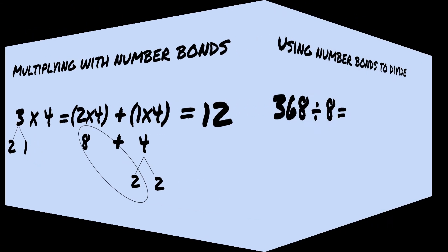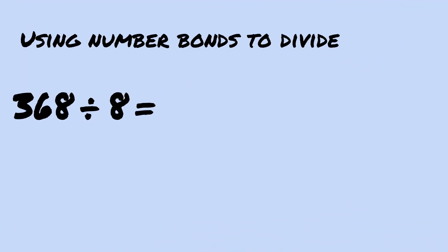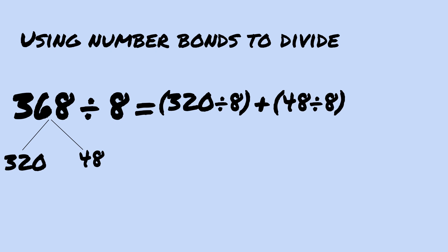We can also use number bonds to solve 368 divided by eight by decomposing 368 into multiples of eight, 320 and 48, which makes this a mental math problem.